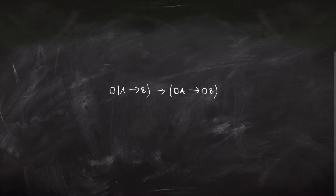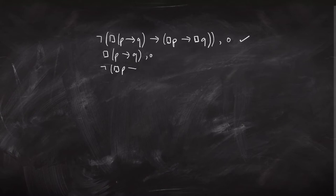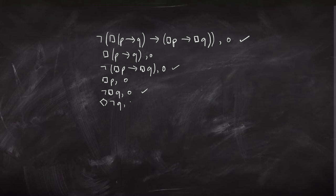Let's see if we can prove this sentence — it's called the distribution axiom. It tells us about how the box for necessity distributes over the arrow for implication. Since it's an axiom, we should be able to prove it. We write down the negation of that sentence with a zero by it. It's a negated conditional, so we write down the antecedent at zero and the negated consequent at zero. That gives us box P at zero and not-box Q at zero. We change that to diamond not-Q at zero.